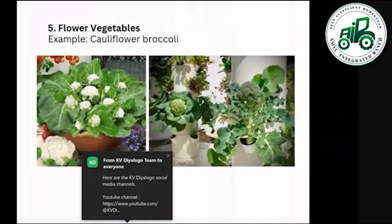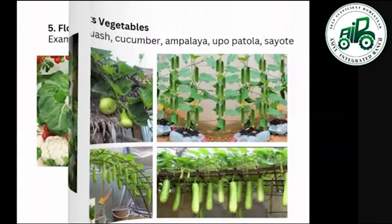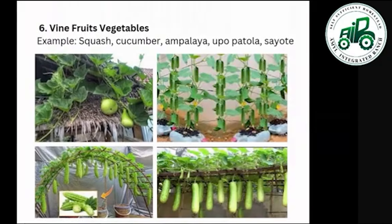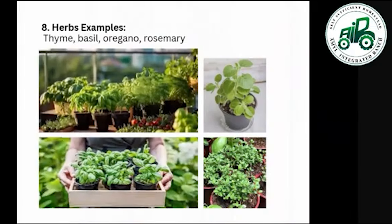Flower vegetables include cauliflower and broccoli. Vine fruit vegetables include squash, cucumber, bitter gourd, sponge gourd, ridge gourd, and sayote. Herbs include thyme, basil, oregano, and rosemary.